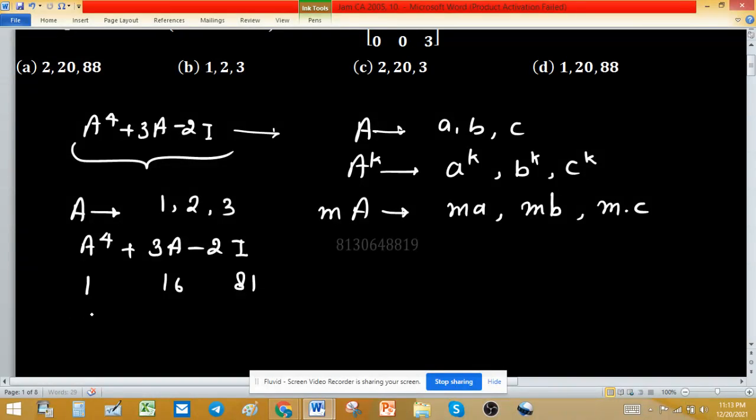Eigenvalue of 3A means 3, 6, 9 and eigenvalue of minus 2 times identity will be minus 2, minus 2, minus 2.